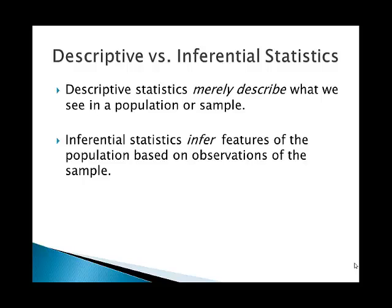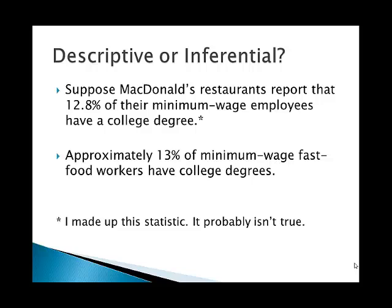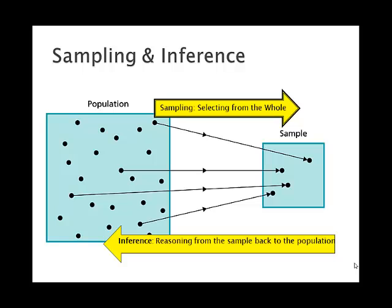Let me give you an example. Suppose McDonald's restaurants were to report that 12.8% of their minimum wage employees have a college degree. We might then conclude that approximately 13% of minimum wage fast food workers have college degrees. We would be sampling out of all minimum wage fast food workers by looking at those who work at McDonald's chain restaurants, and then inferring — assuming that what happens at McDonald's is representative of all such restaurants — and making an inference about that broader population.